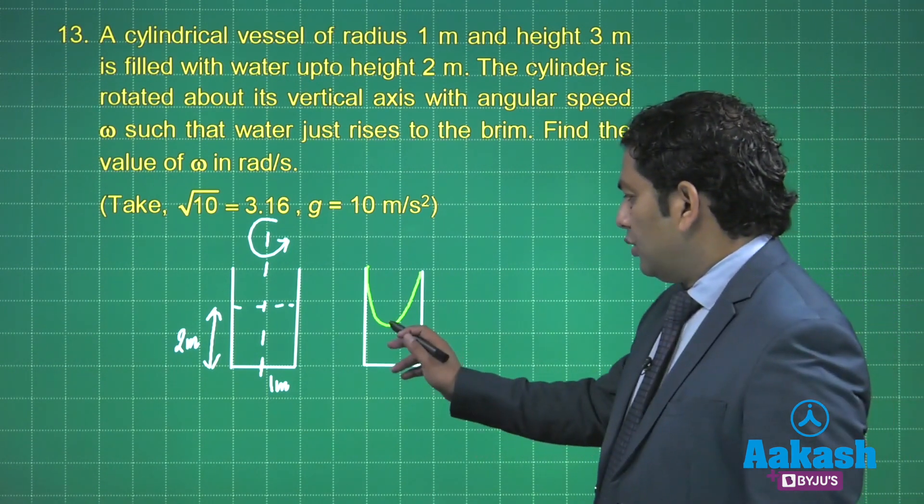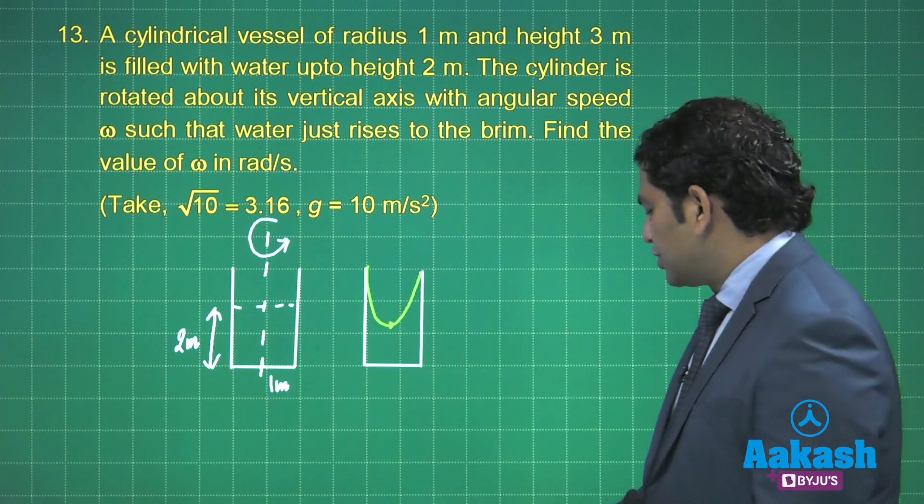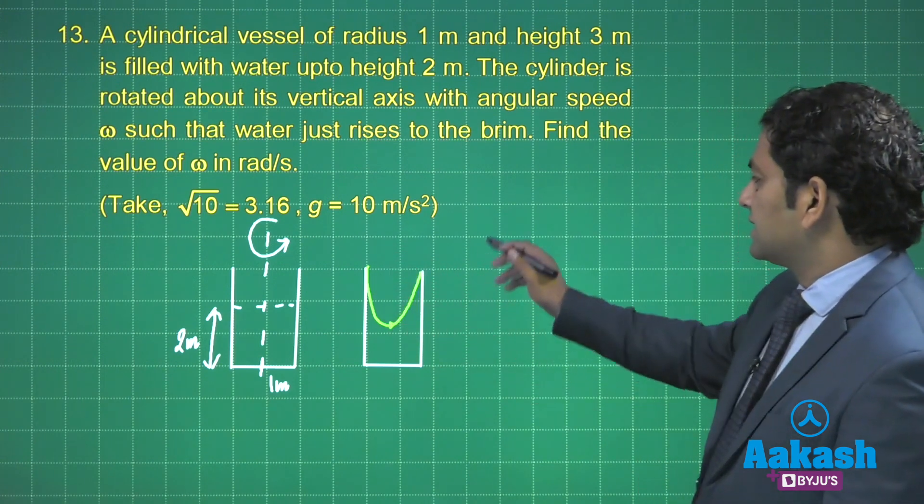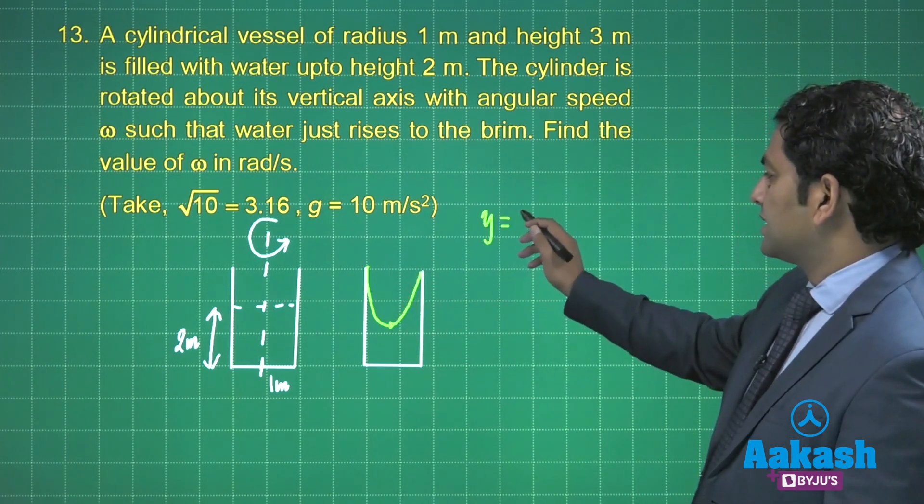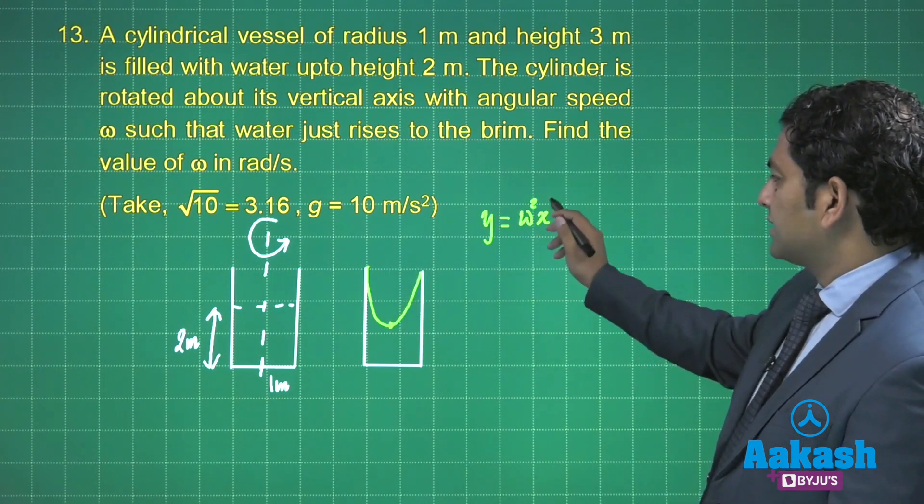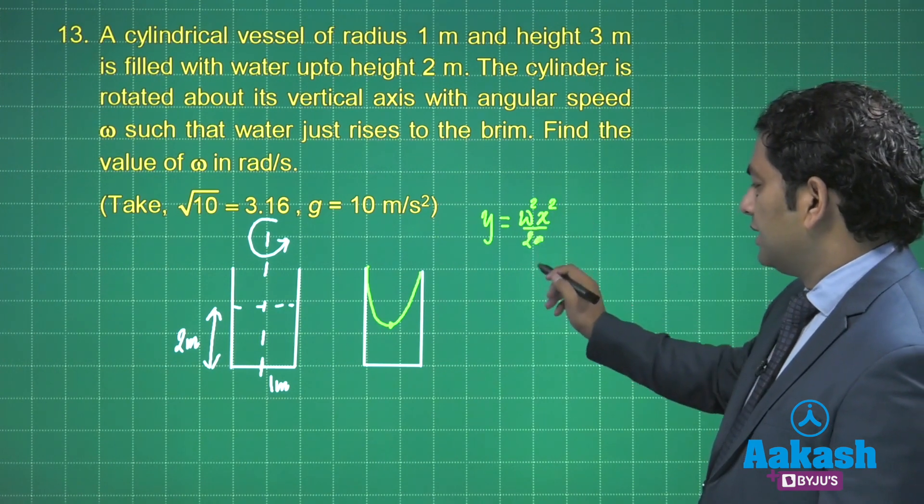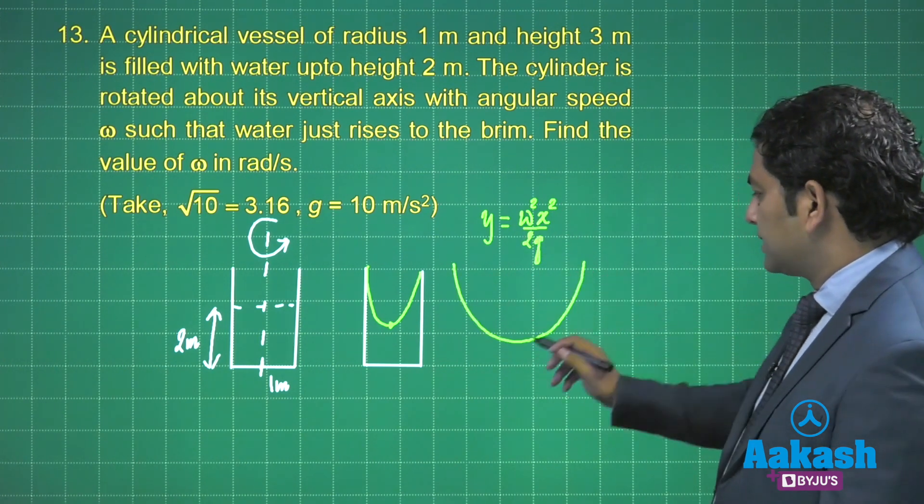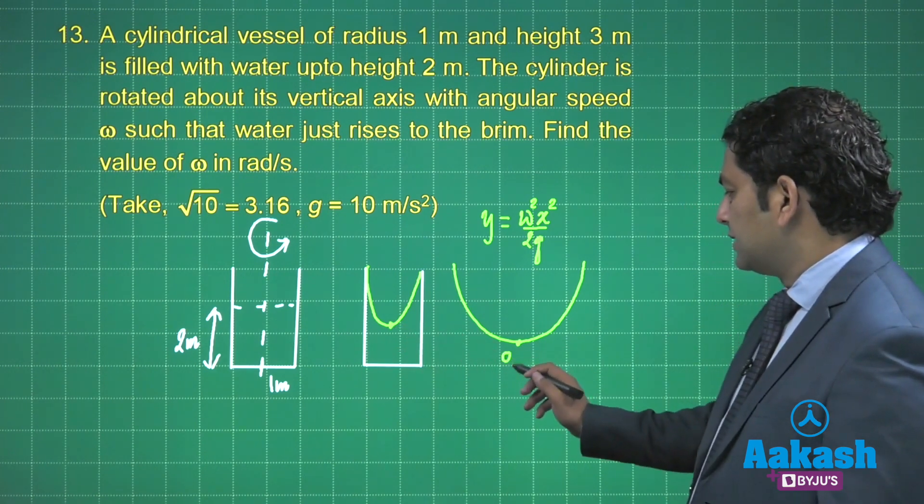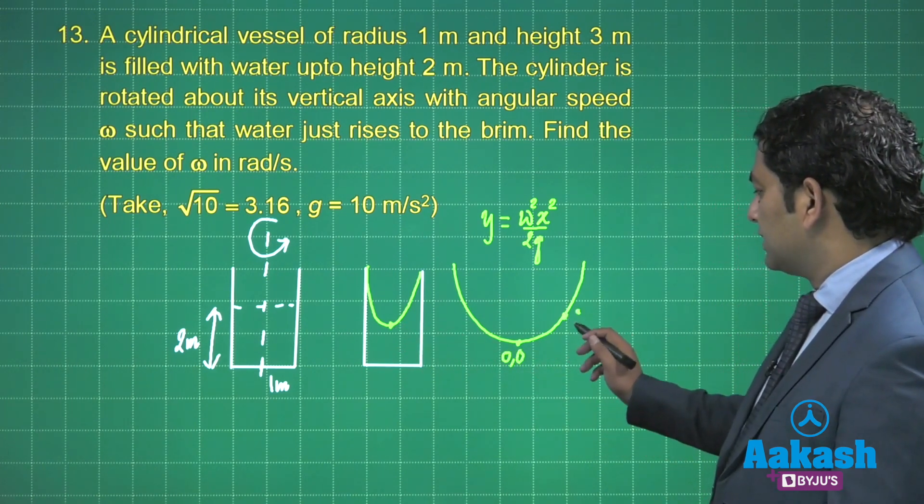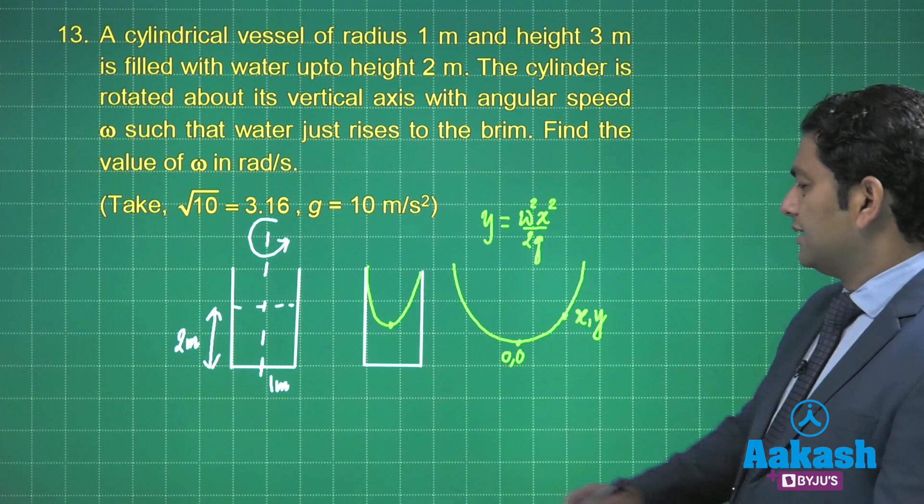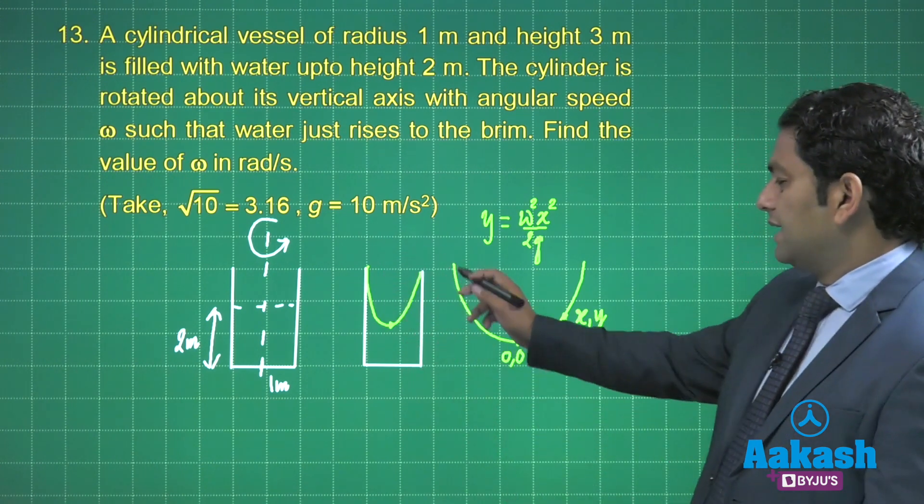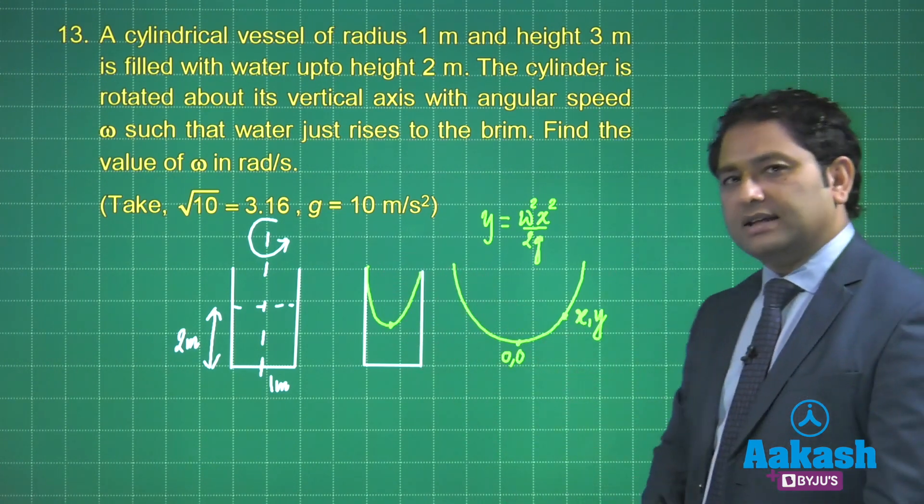All of you must be knowing that the shape of the free surface here, y comes out to be ω²x²/2g. Let me draw where we measure the y and x. This is the origin and this point is x,y. I've just magnified the free surface.